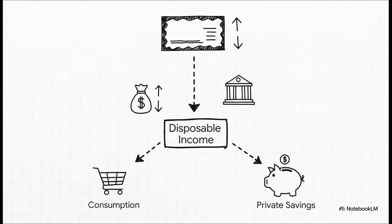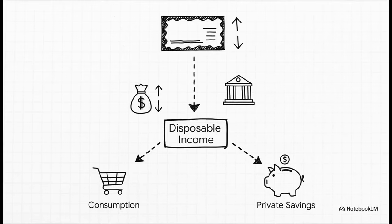For us as individuals, it's pretty straightforward. You get your paycheck, the government takes out taxes, and whatever is left over is your disposable income. Any dollar you don't spend on groceries or rent or a new phone is, by definition, your private savings. If your income goes up, you'll probably save more. But if your taxes go up, you have less to start with, so you end up saving less.